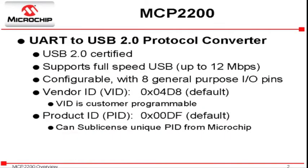The MCP2200 is a USB to UART protocol converter, which is USB 2.0 certified. The MCP2200 offers eight general purpose I/O and customer configurable vendor and product ID registers. Both of these registers come with pre-programmed values. However, Microchip does offer customers the ability to sub-license a unique product ID.